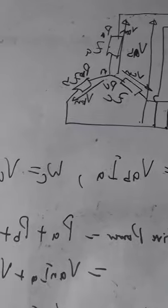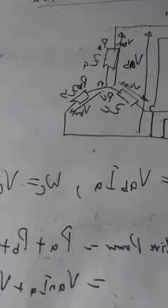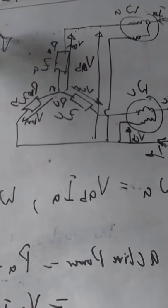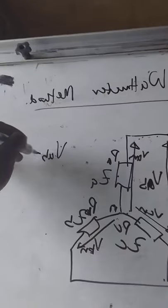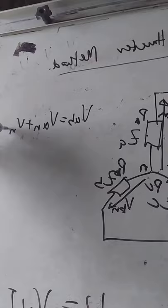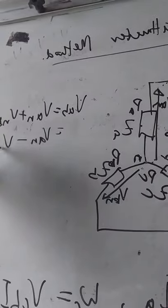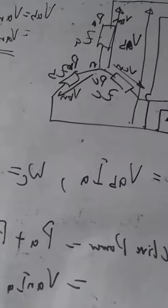That will give you this voltage, which is VAB. Normally your VAB is supposed to be VAN plus VNB, that is the VAB, which is what, VAN minus VBN. So that is how we have this one equal to VAB.